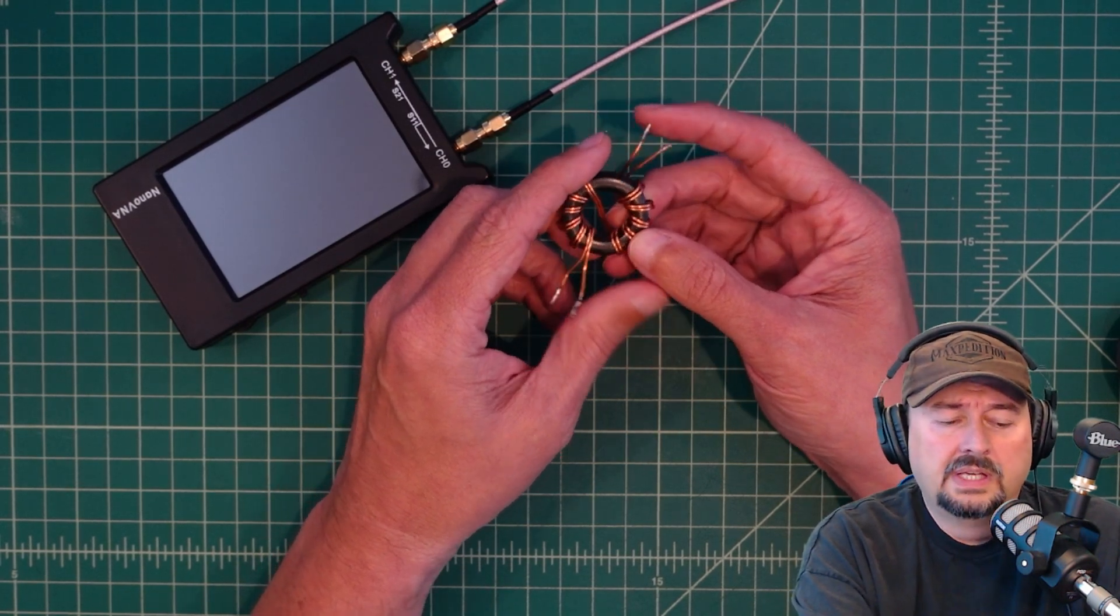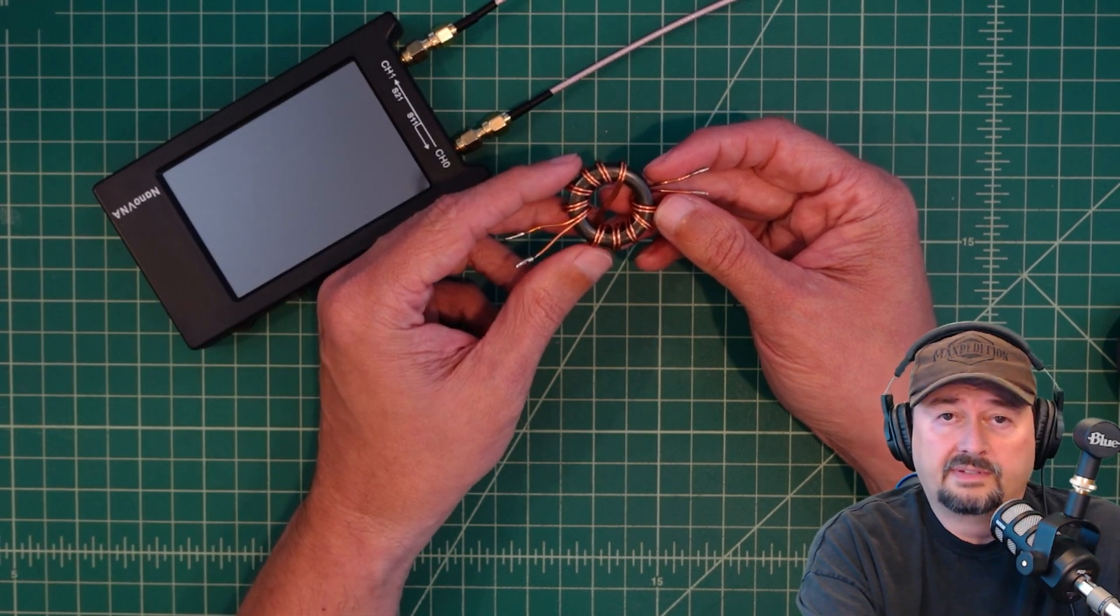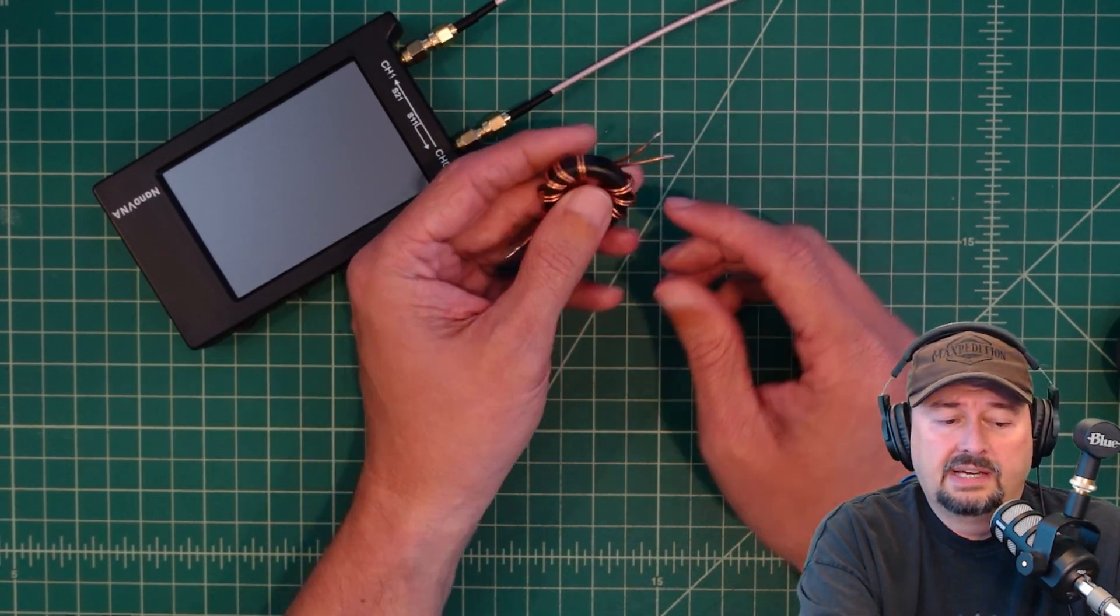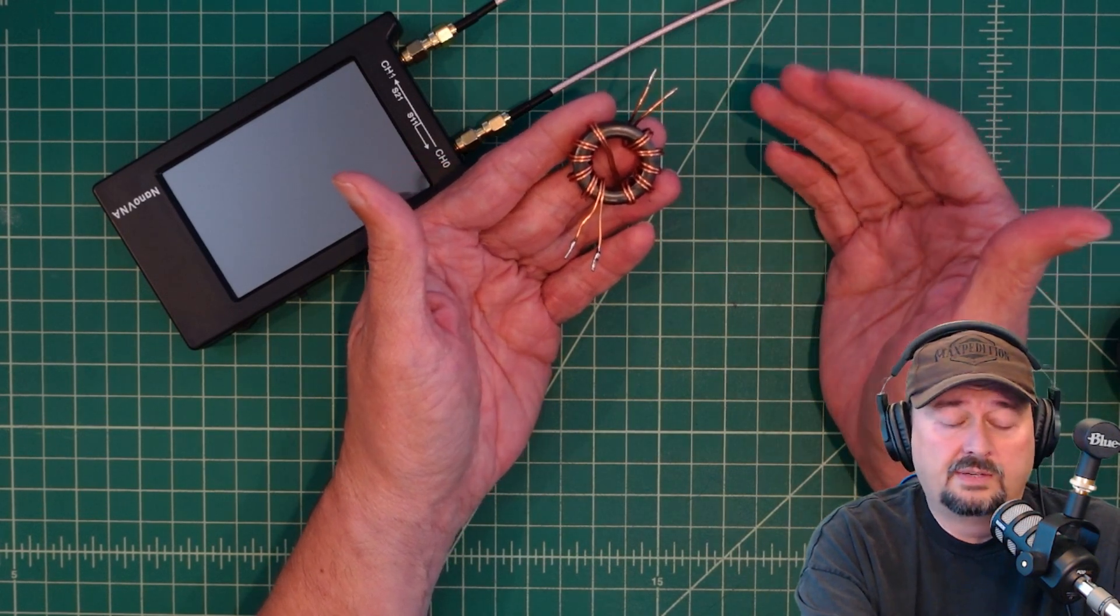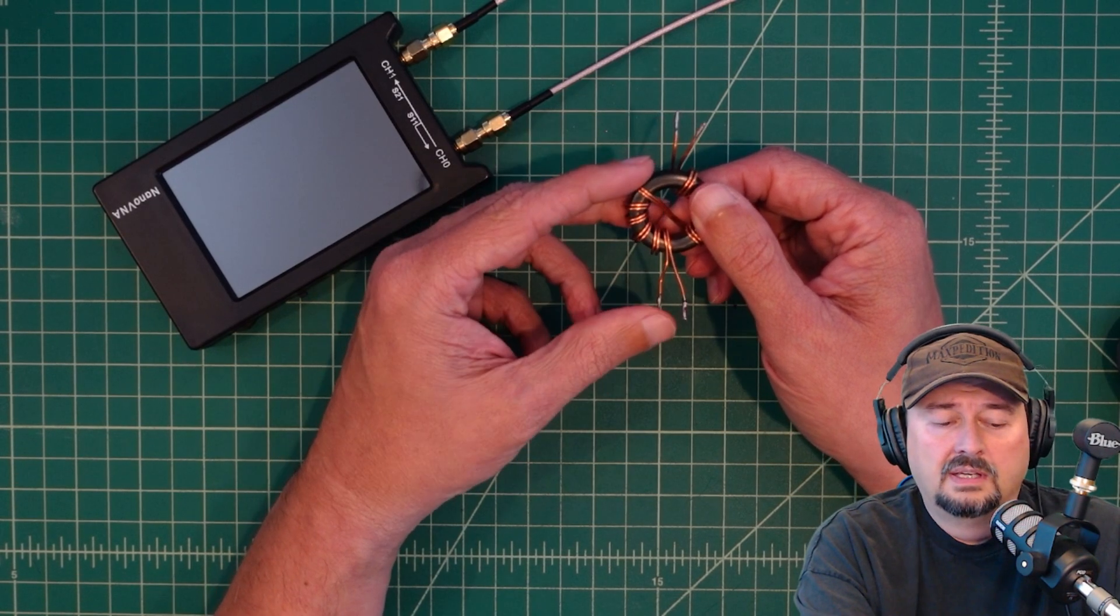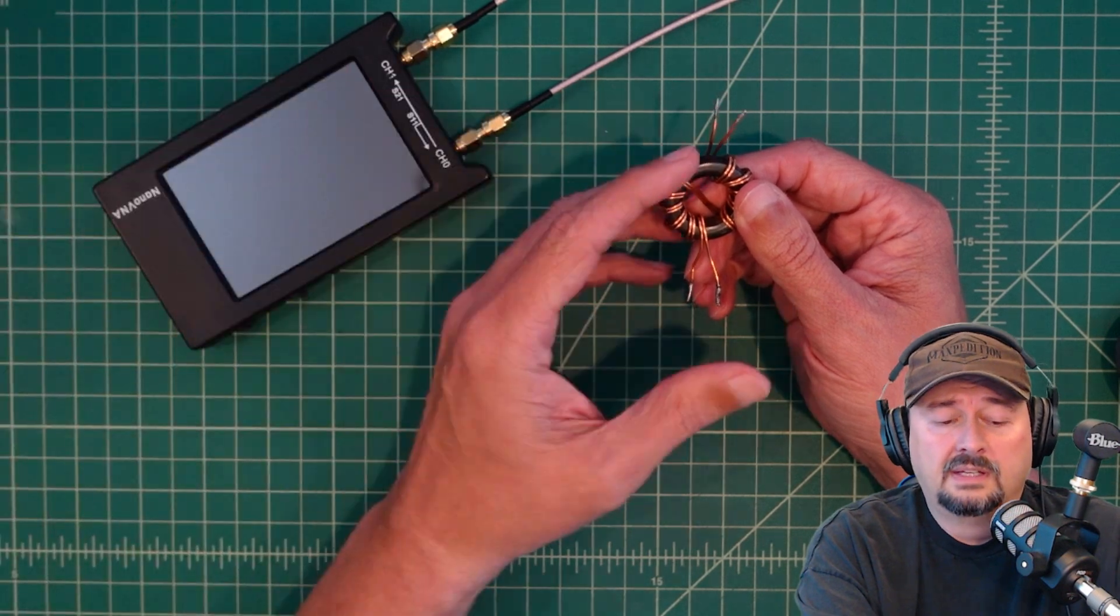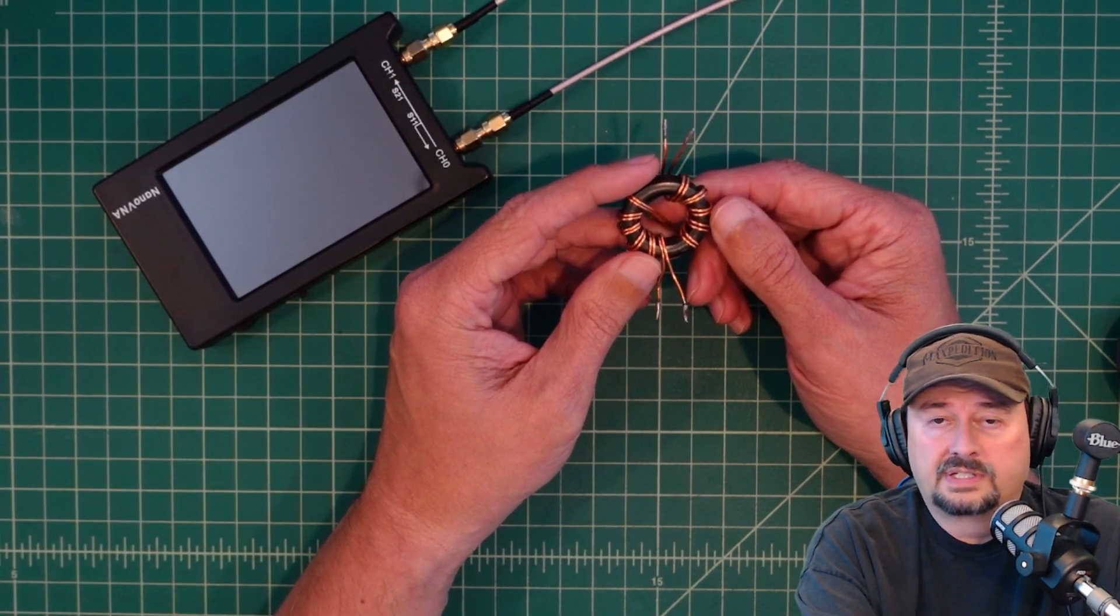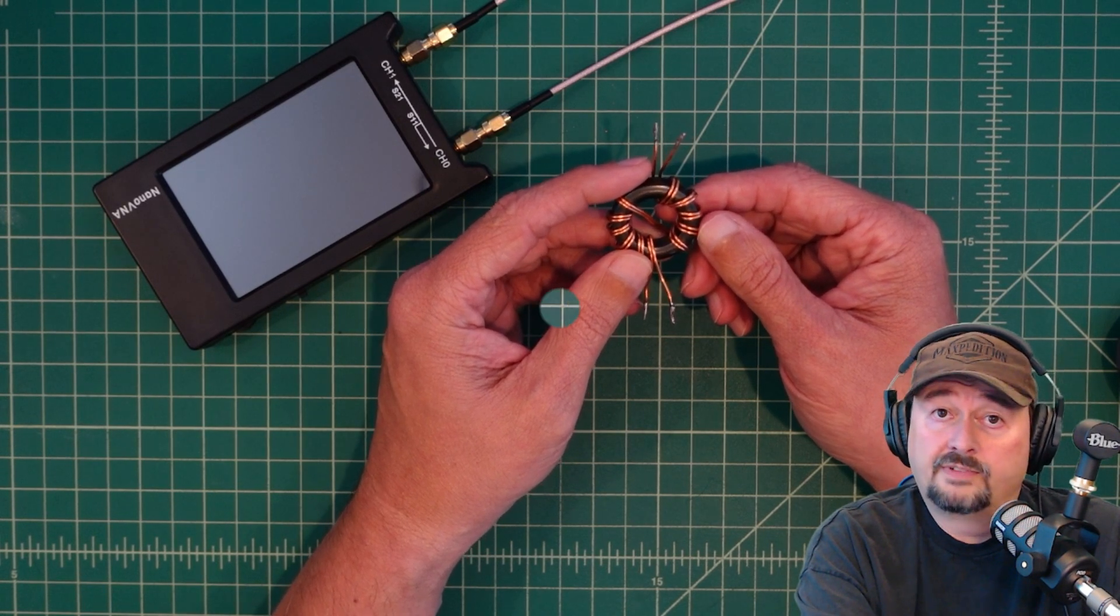And then what we'll do is we'll hook this core up so that there's a signal going through both sides of it. When we do that, you'll see how we have equal and opposing current and there is no or minimal attenuation or loss. And then when we just use one of these windings, you'll be able to see that there is what we would consider significant, up to 25 dB of loss at certain frequencies. So let me go ahead and get this set up and we'll take a look and see what we find.